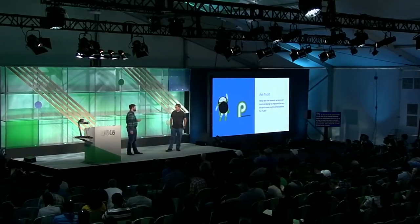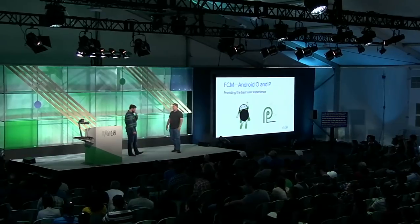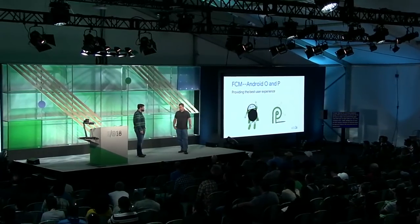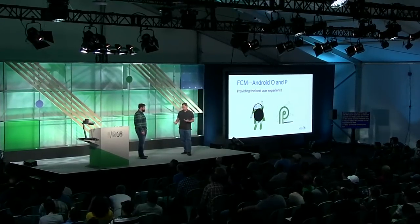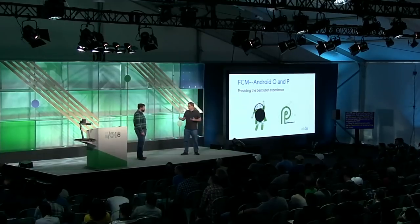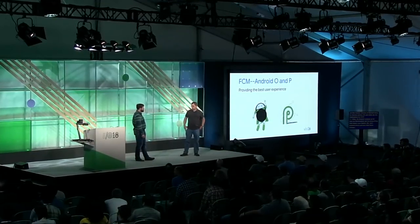For the rest of the session today, I'm basically going to ask Todd all of my burning questions about FCM performance so he can tell us all how to make high-performing apps with FCM. Todd, please tell us — what are the newest versions of Android doing to improve battery life, and what are the implications for FCM? Android versions as far back as Marshmallow can be doing things that impact your battery life. Let's examine those changes and talk about how you can make sure FCM continues to perform well in your app.